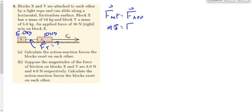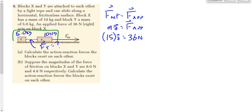What mass do I use here — the 10, the 5, or the 15? 15. If you're looking for the acceleration of the system, let's use the entire mass. The applied force is 36 newtons. What we're doing is effectively pretending the 10 and the 5 are one object to get the acceleration of the system. A ends up being equal to 36 divided by 15, which is 2.4 meters per second squared.